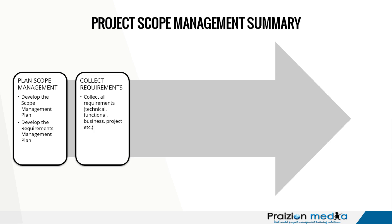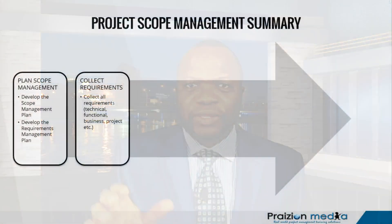A lot of people often get the first process mixed up with the second and the third. Plan Scope Management is planning the how of scoping out the project — planning the how of eliciting requirements. So you get your Scope Management Plan and your Requirements Management Plan. And in the process of Collect Requirements, the plan you focus heavily on is the Requirements Management Plan. This is where you collect all manner of requirements: technical, functional, business, project, and so on.